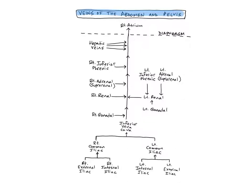The right and left external iliac veins are deep veins that begin as continuations of the femoral veins of the thigh, and join with the internal iliac veins to form the common iliac veins. They drain the anterior portion of the lower abdominal wall, external genitals, and the lower limbs.